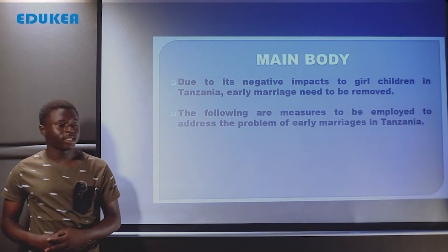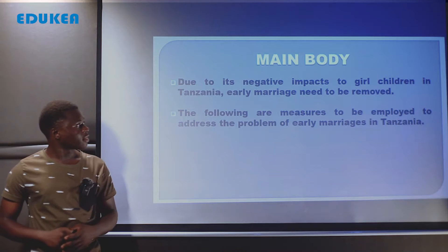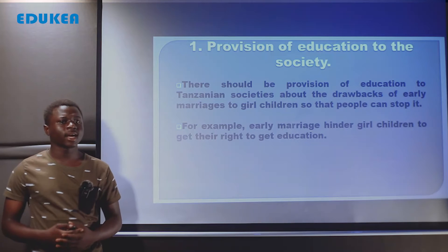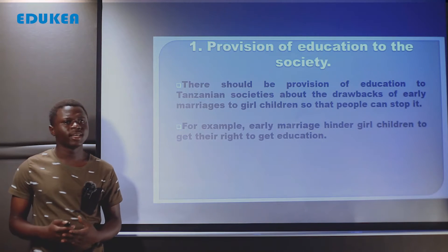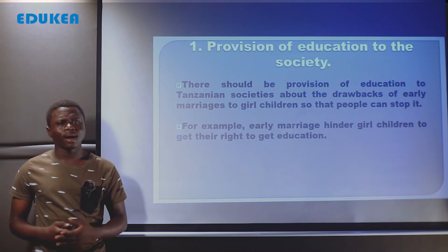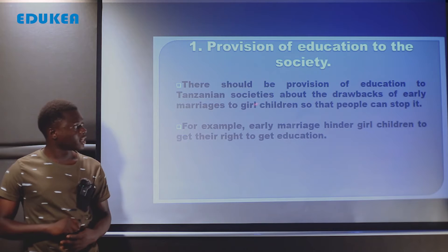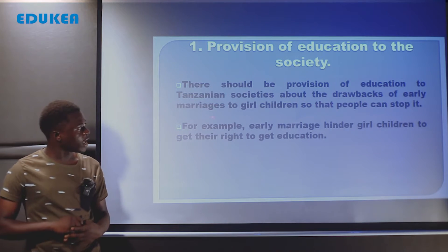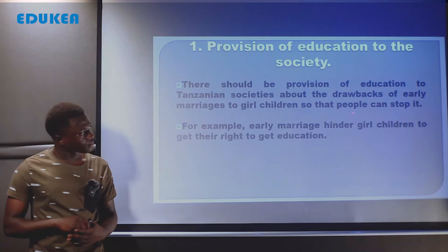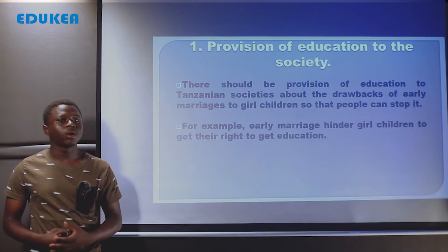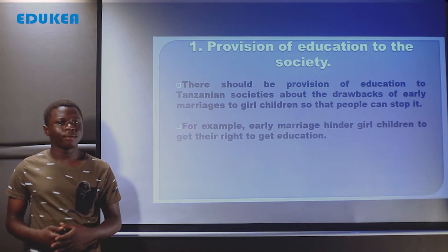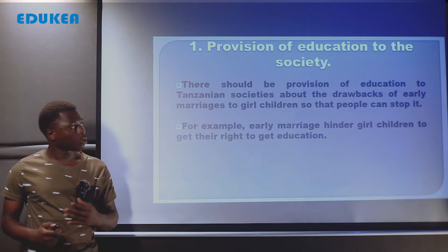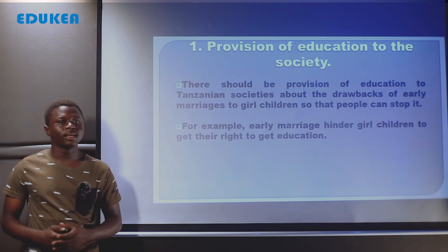The first solution is provision of education to the society. Itolewe elimu katika jamii kuhusu negative impacts of early marriage. There should be provision of education to Tanzanian societies about the drawbacks of early marriages to girl children, so that people can stop it. Tunabidi kutolewa elimu ya madhara hasi ya ndoa za mapema kwa watoto wakike.